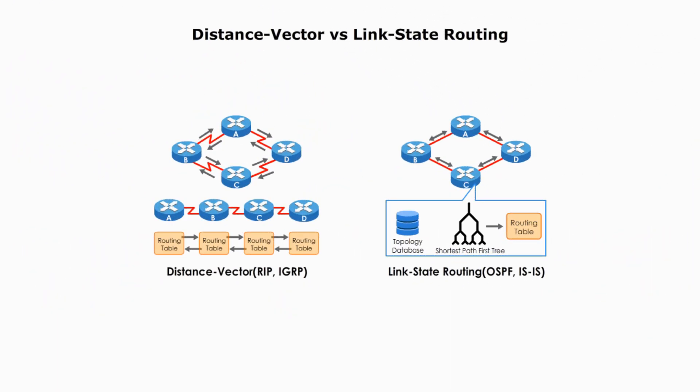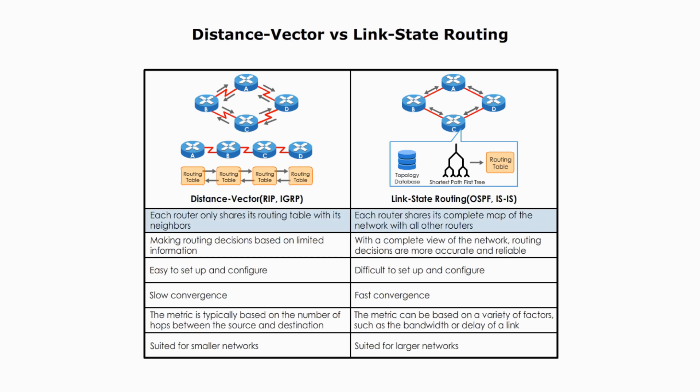Let's talk about the main differences between distance vector and link state. In distance vector routing, each router only shares its routing table with its neighbors, while in link state routing, each router shares its complete map of the network with all other routers. This means that link state routing requires more bandwidth and processing power than distance vector routing, while distance vector routing relies on limited information. Link state routing allows each router to have a complete view of the network, making routing decisions more accurate and reliable. However, this also means link state routing is more complex to set up and configure.